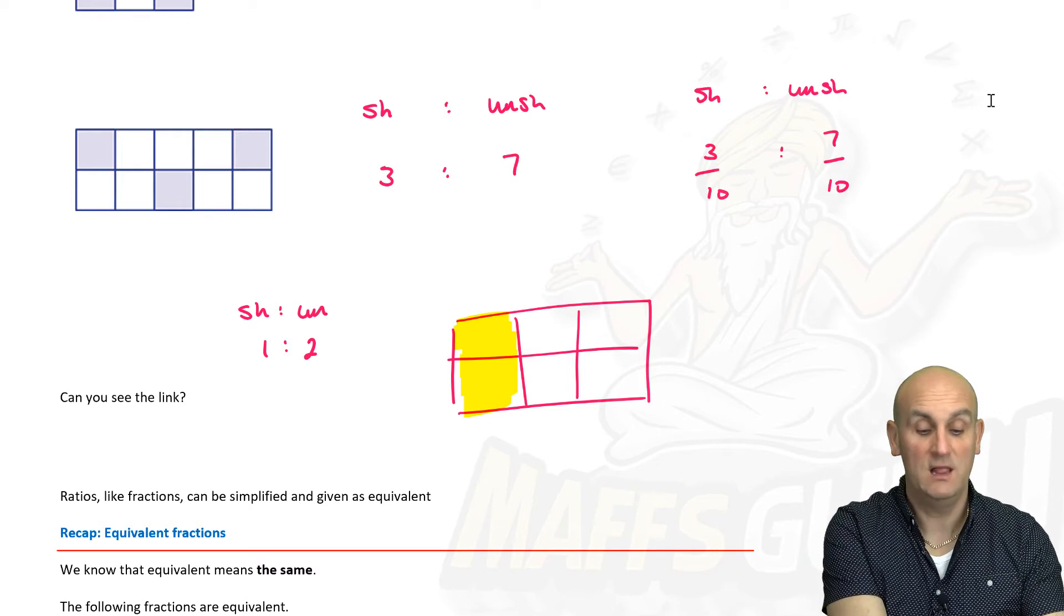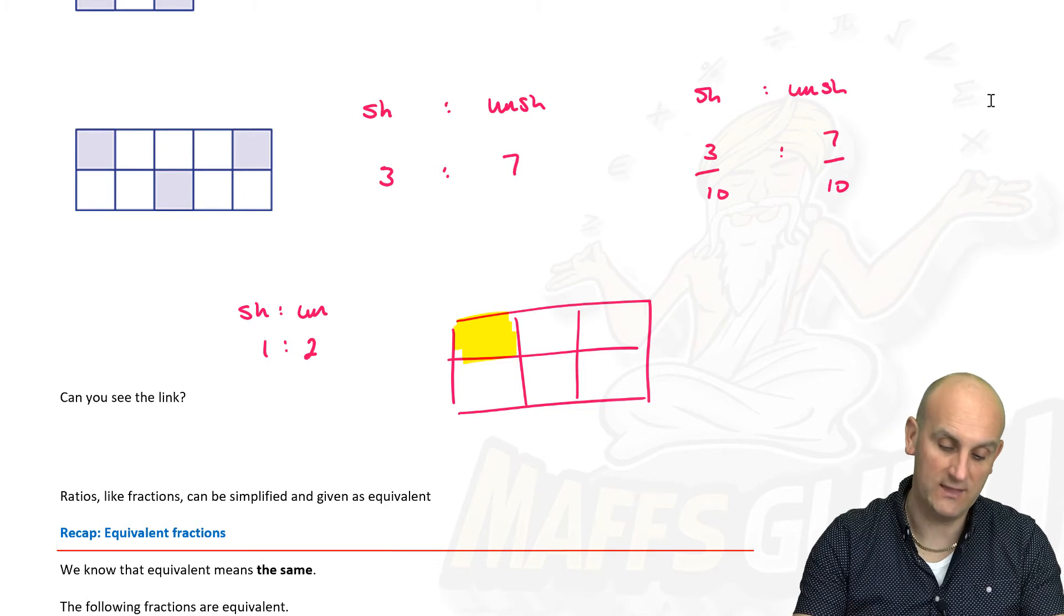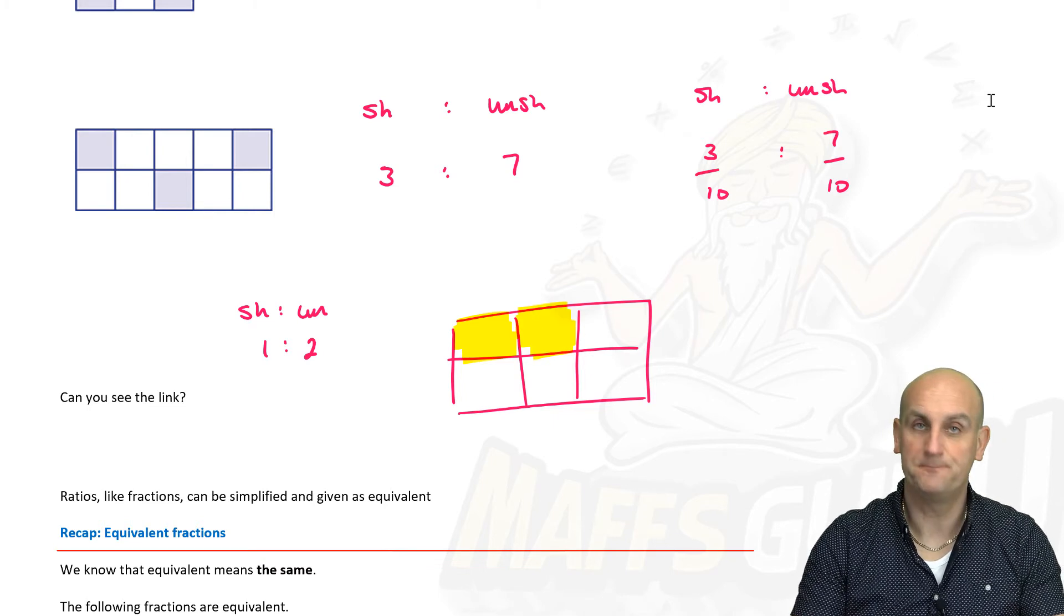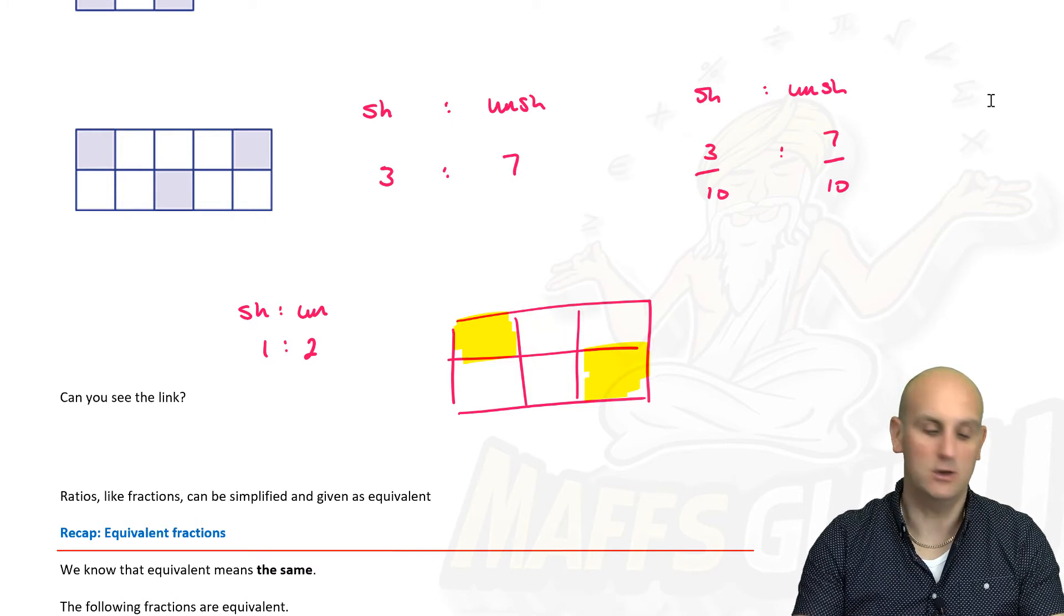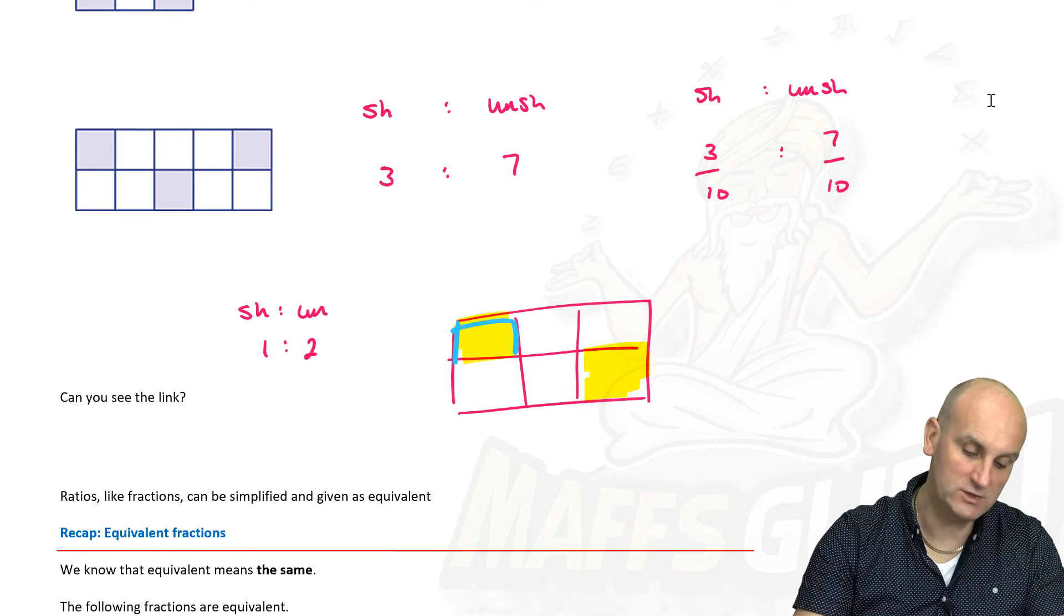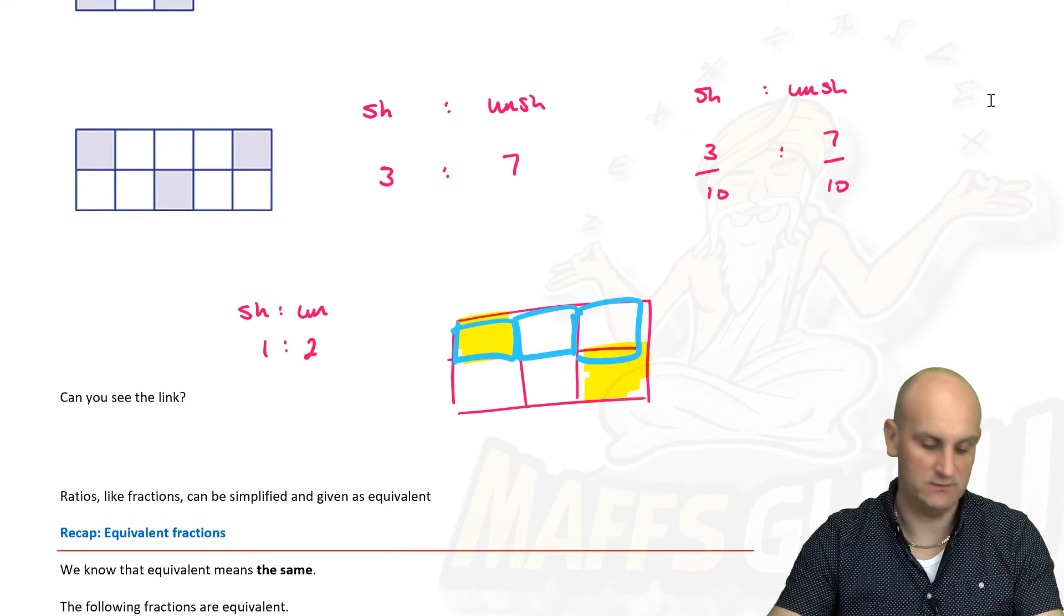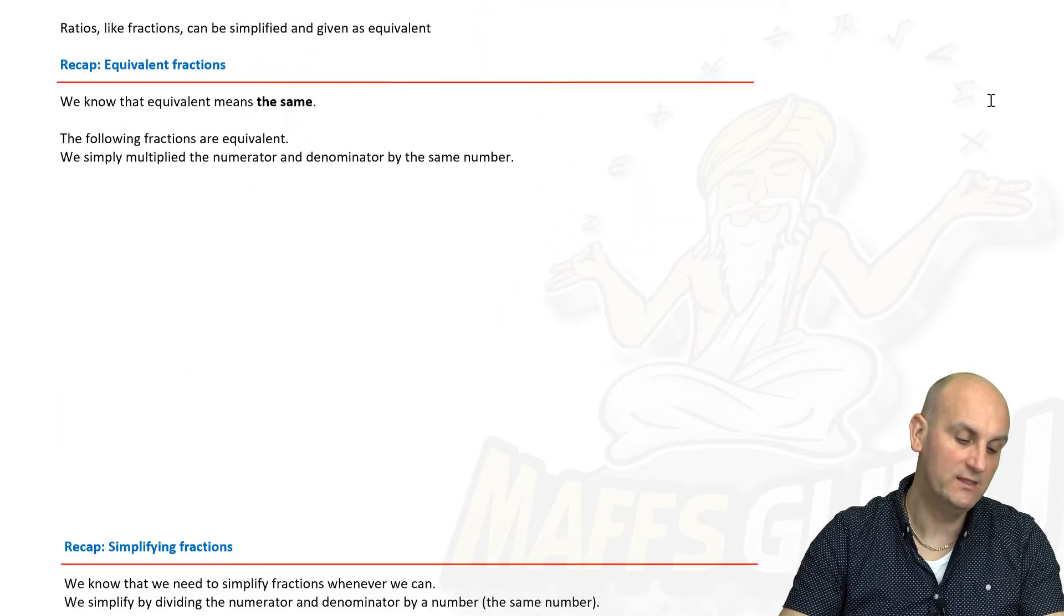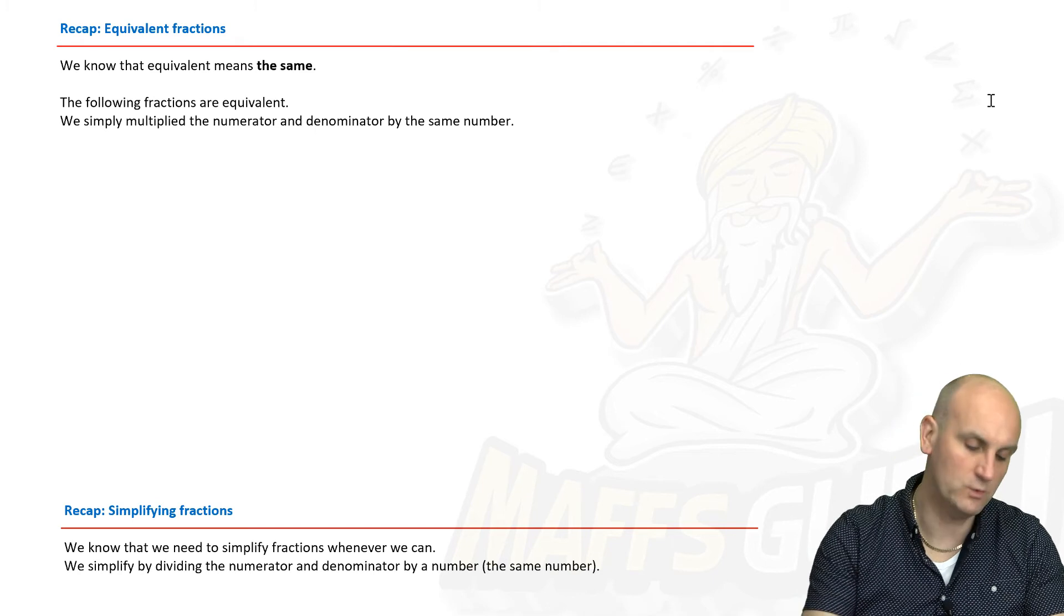I've got one shaded here, there are two unshaded. And believe it or not, that now has been colored in to the same ratio. I didn't have to do that square there. I could have done that square there, doesn't matter. There are still now one shaded for two unshaded. I could have done this square here, so long as for every one shaded there are two unshaded, we still have the same ratio.